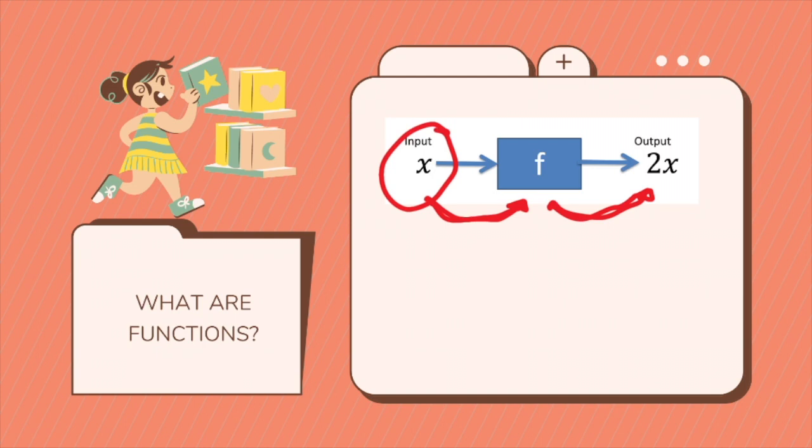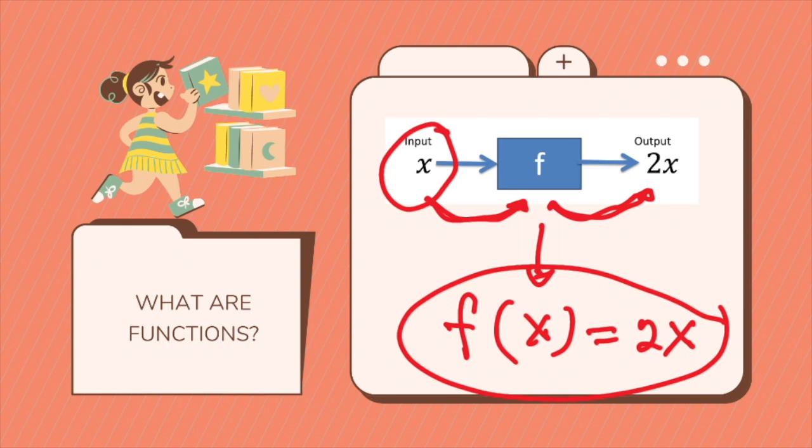So here, this input of your X, you will have your f that is name of the function. It's usually f or g and its output will be 2x. So this is how you would write a function of your x, which is your input. So x here is your input. The output is your 2x.